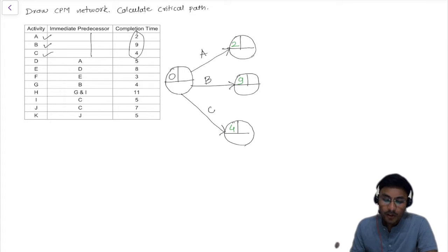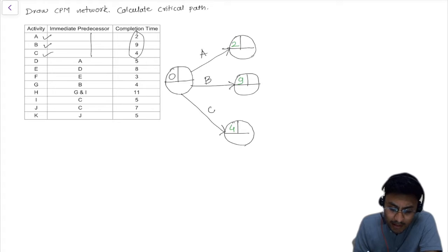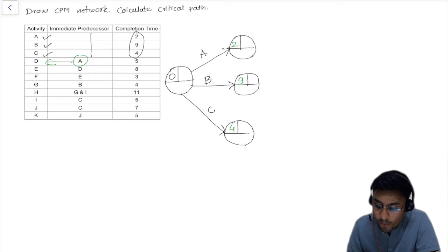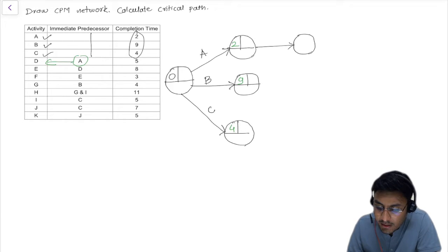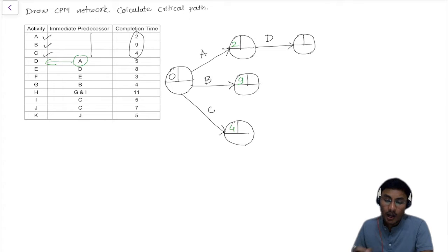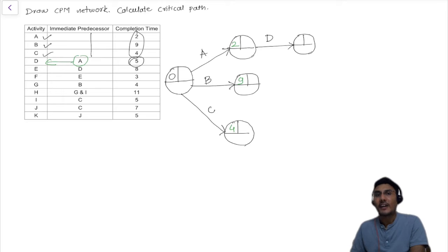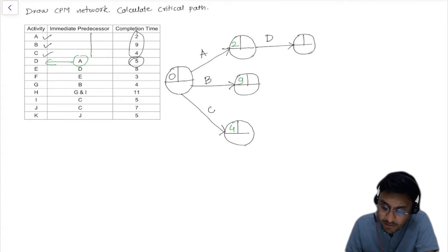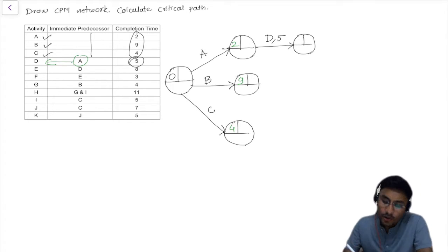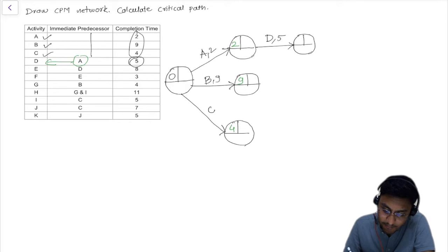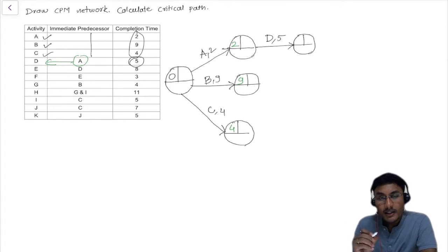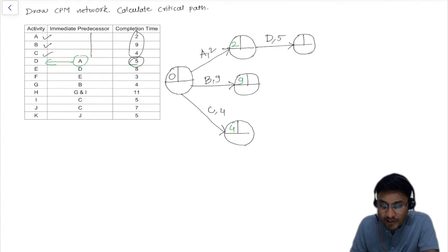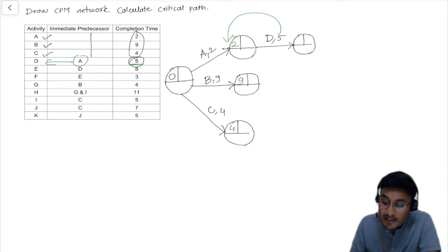Moving further, once A activity completes, D activity will start — so we need to draw a connection from A to D. D activity has a duration of 5. So the finish time for D activity will be 5 plus 2, which is 7.